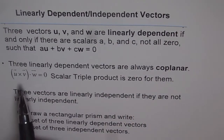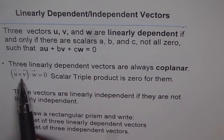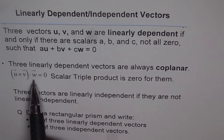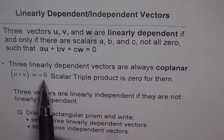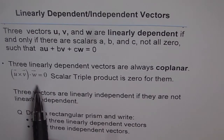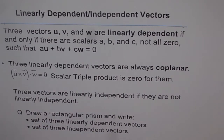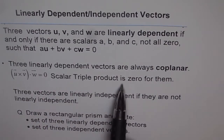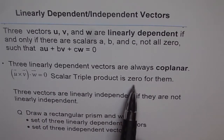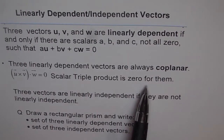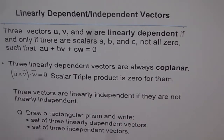That is, for vectors u, v, and w, the cross product of two of them with the dot product of the third — if that gives us zero, then we say the vectors are coplanar. We call this the scalar triple product. So the scalar triple product is always zero for linearly dependent vectors.